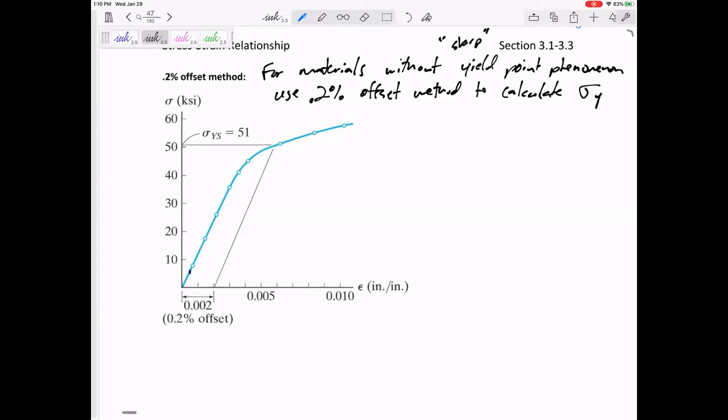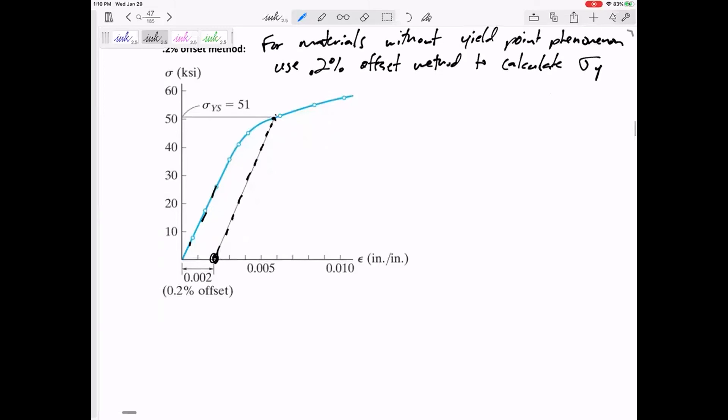So if you needed to calculate it, you'd actually kind of start at the 0.002, go up the slope of E, and see where that crosses the stress-strain diagram right there, okay?